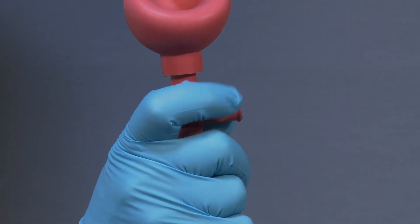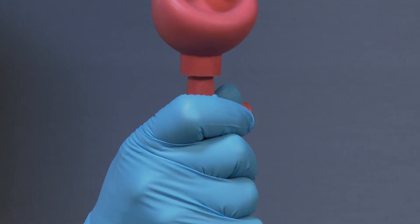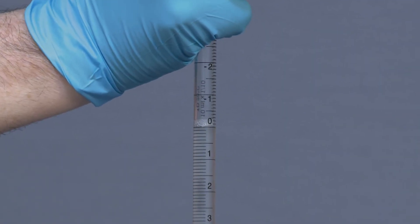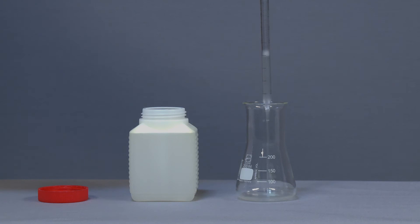Use valve E to drain the solution in a controlled way until the mark indicated in the product datasheet is reached. Empty the solution in the Erlenmeyer flask by pressing valve E.